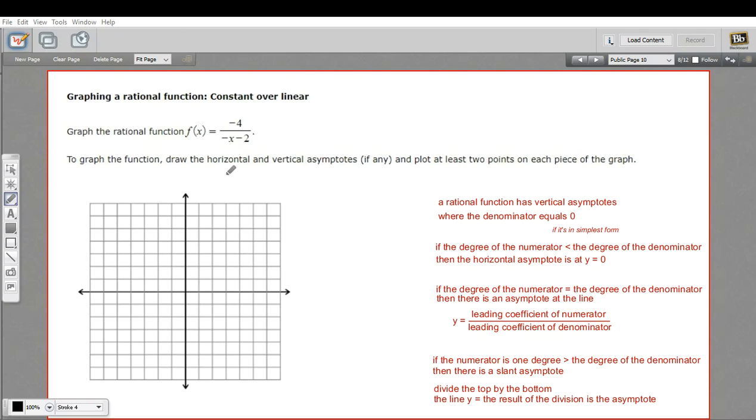In this problem, we're being asked to graph this rational function. It doesn't look like it's too complicated. The steps we're going to go through are to find the asymptotes first, and then to just try some points and see what kind of shape we start to get. So that's the basic approach.